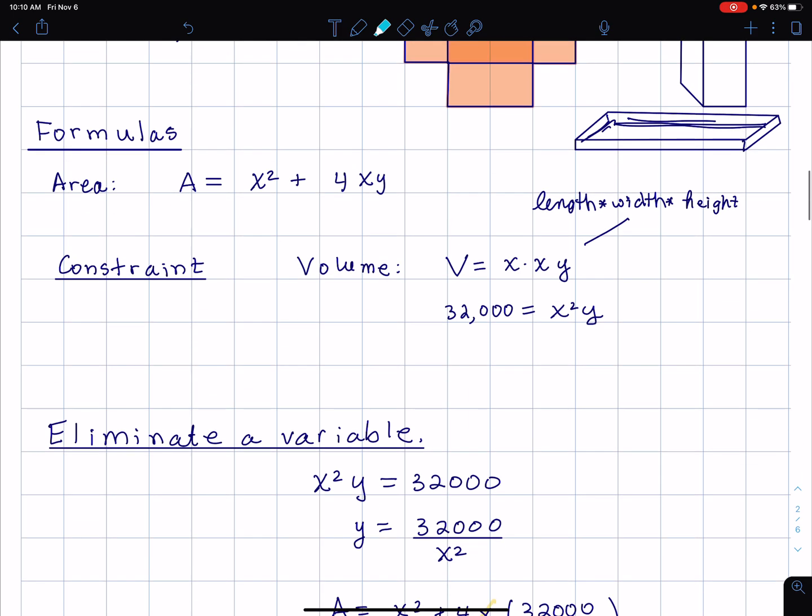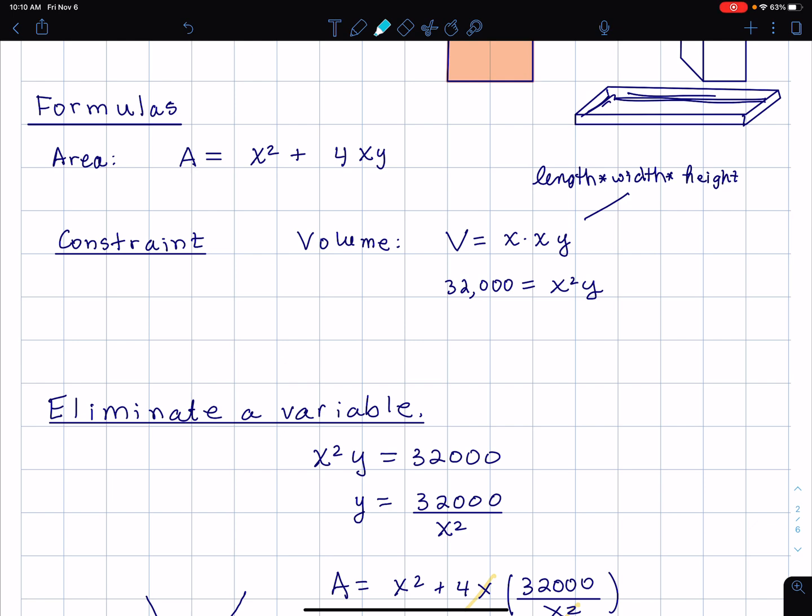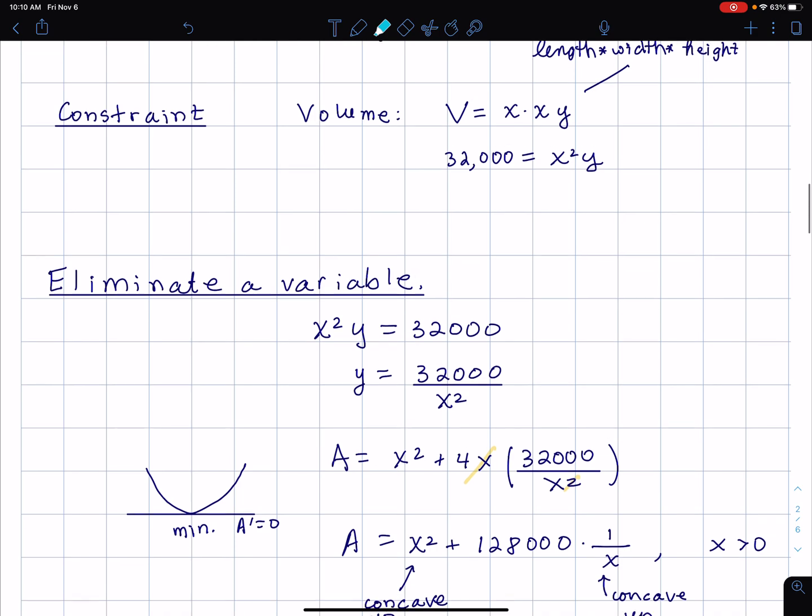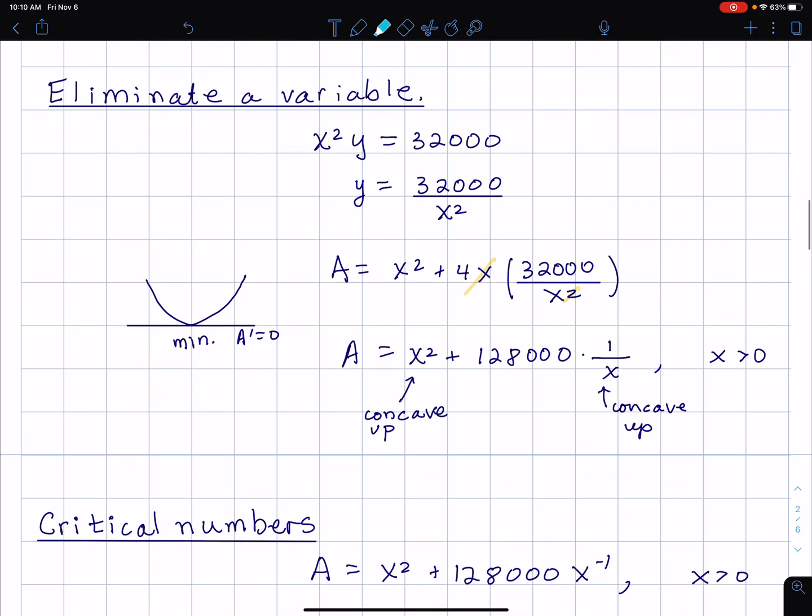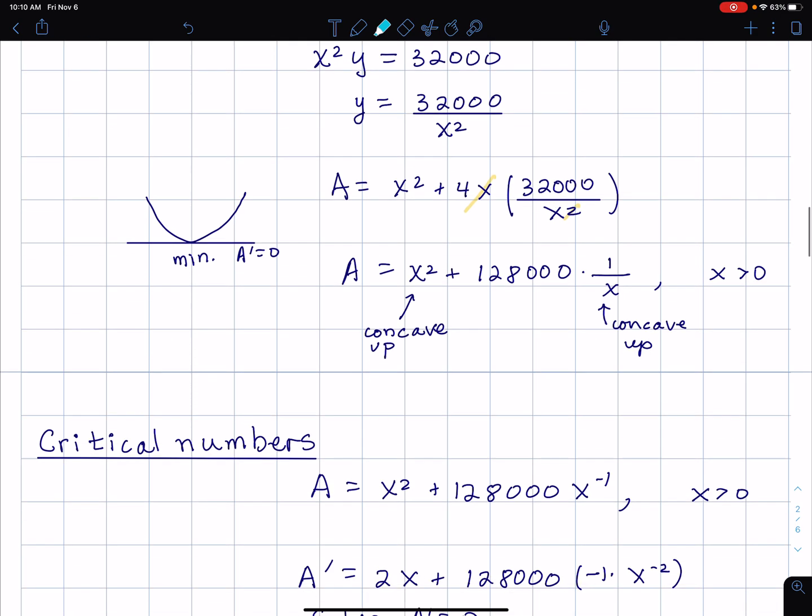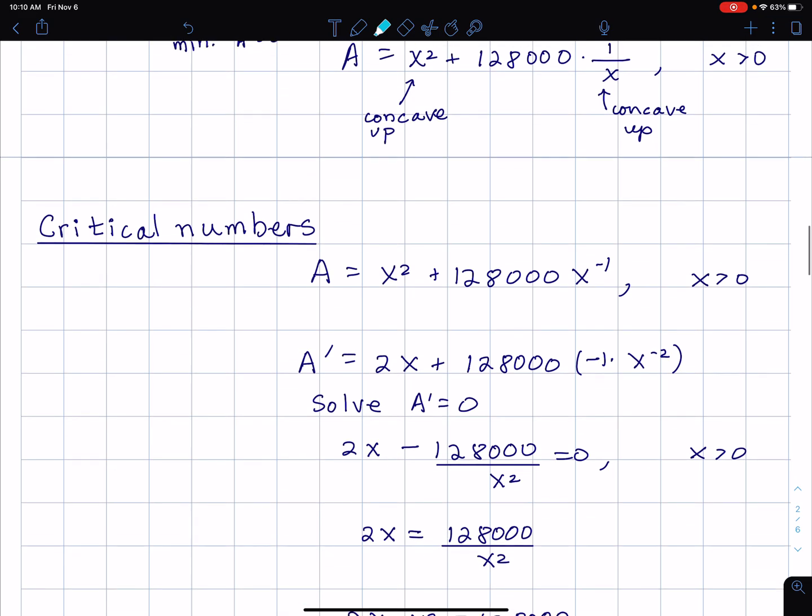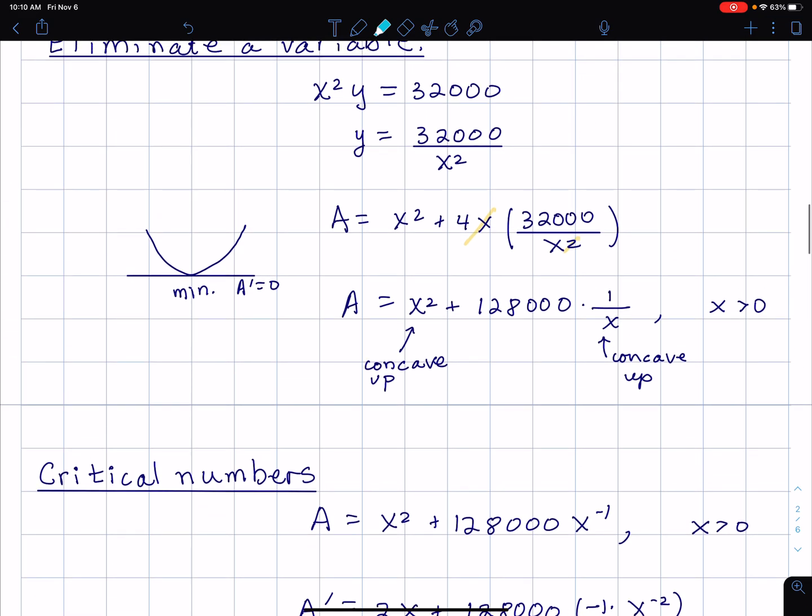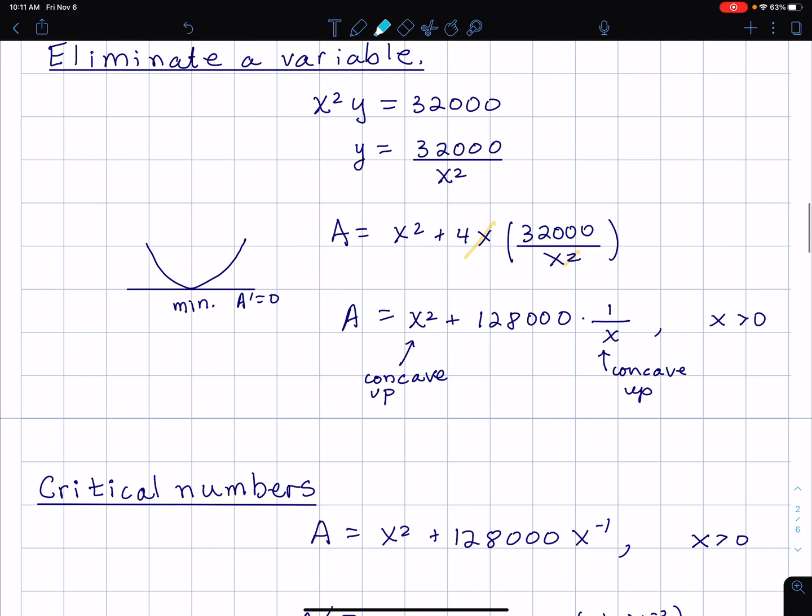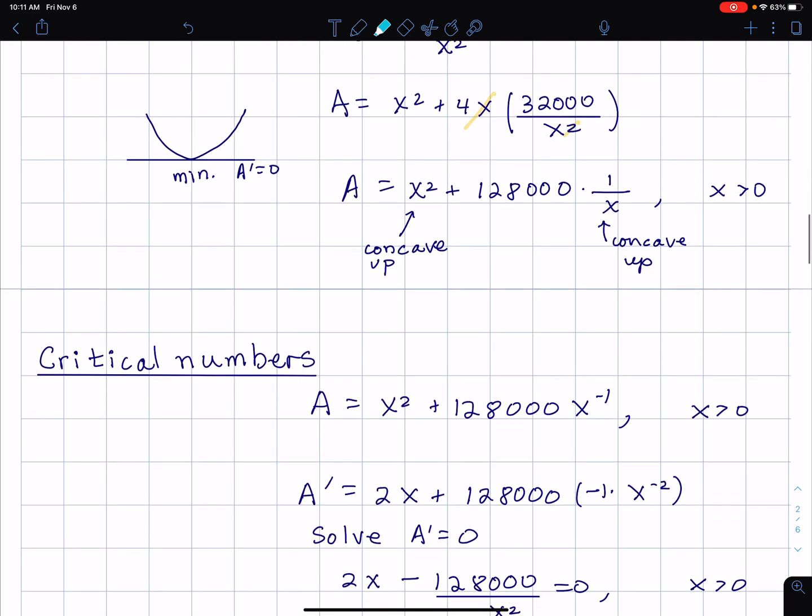We use the constraint, pretty much how it always works. You take the constraint and you use that to eliminate one of the variables. y equals 32,000 divided by x squared, and then in your area formula you replace y by that expression, which I'm doing here. Cancel. One over x is x minus one. Then when you do that, you have A as this nice little formula of x, and it turns out it's easy to find the derivative, do that power rule.